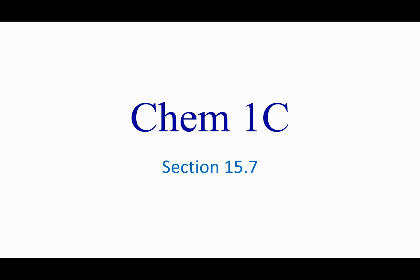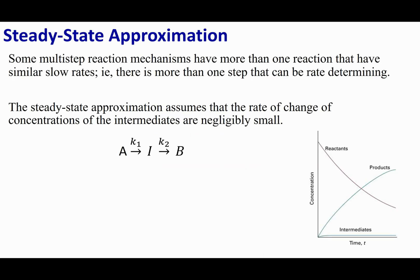Welcome to section 15.7. Last we talked, we were proposing mechanisms for our overall reaction. When we did this, we proposed these elementary steps, and it turned out that in these series of steps, one of the steps was the slow step or the rate determining step. And based on the slow step, we were able to write the rate law. So here's a question: what would happen if both of these elementary steps — or all of your elementary steps — are about the same rate?